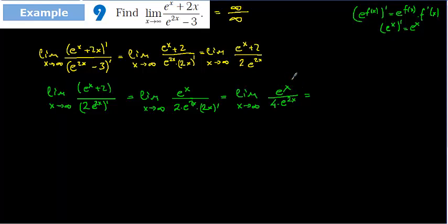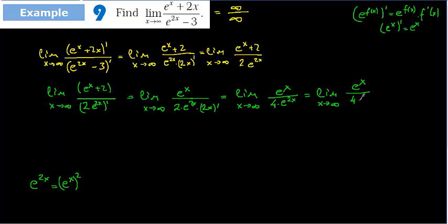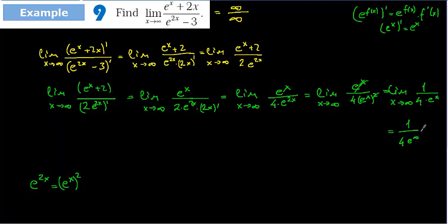At this point, rather than continuing to apply L'Hôpital's rule, we recognize that e^(2x) equals (e^x)². So the expression becomes e^x over 4·(e^x)². We simplify by cancelling one e^x from numerator and denominator, giving 1 over 4·e^x. Applying the limit as x tends to infinity: 4·e^(infinity) is infinity, so the result is 1 over infinity, which equals zero.